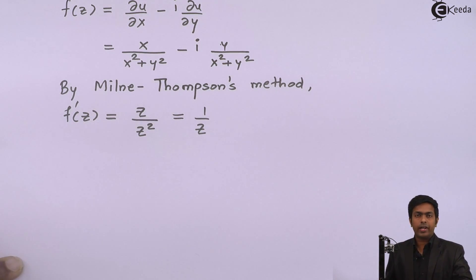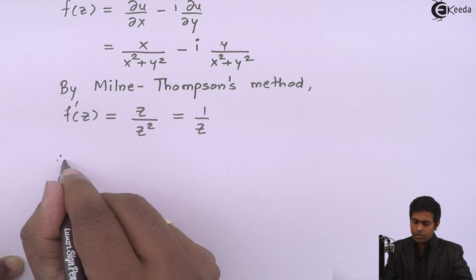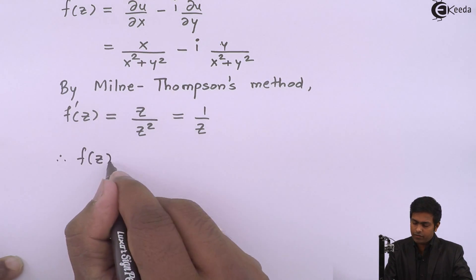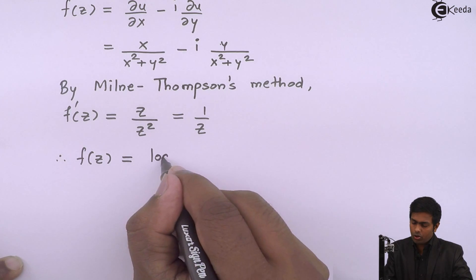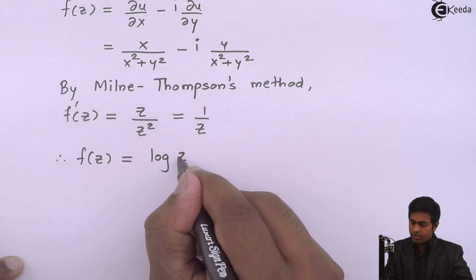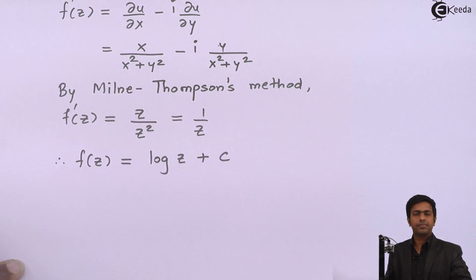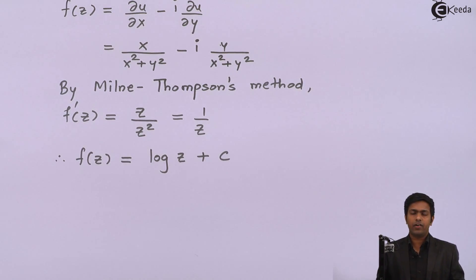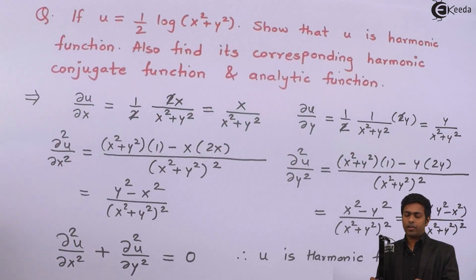To get f(z), we integrate both sides with respect to z. Therefore, f(z) = log(z) + c. This is the analytic function f(z).